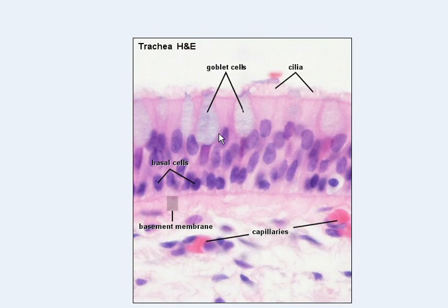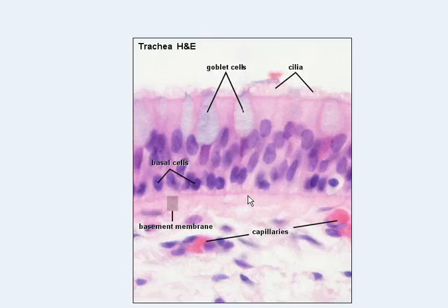Here are the goblet cells, and here are the columnar epithelium's nucleuses. That wraps up the video. Just remember: function — sticky mucus; and location — simple columnar epithelium and pseudostratified columnar epithelium. Thanks for watching everybody, see ya.